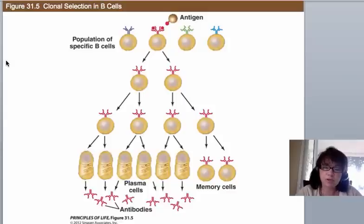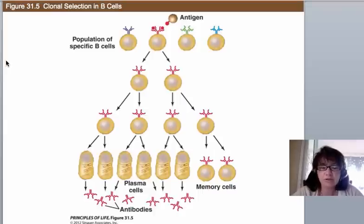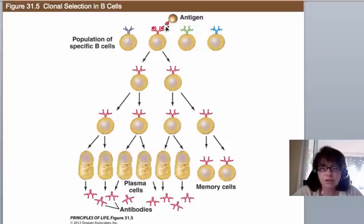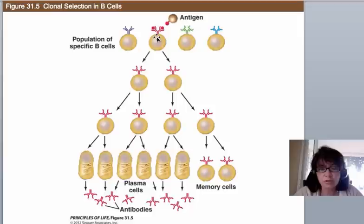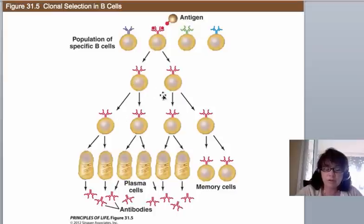Let's talk about how the B cell is selected. Say chicken pox virus comes into your body — we focus on the part that your B cell sees. That little red part of the protein matches this particular B cell, which has that antibody on its surface as its receptor. It encounters the antigen, a signal gets sent to that B cell — a T cell also has to tell it to act — and it gets a growth factor signal to divide. The B cell divides and divides.